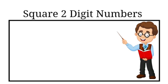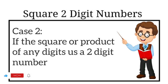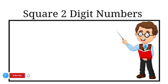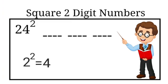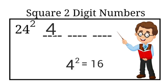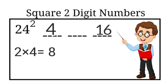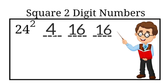Our final answer is 4-8-4, which is 484. Now you might be wondering about another case — what if the square of the first or last digit, or the product of the two digits, is a two-digit number? Let me explain with the example of number 24. The first part: 2 squared is 4. The last part: 4 squared is 16, which is a two-digit number — for now just write 16. The middle part: 2 times 4 is 8, and 8 times 2 is 16, so the middle part is also 16.